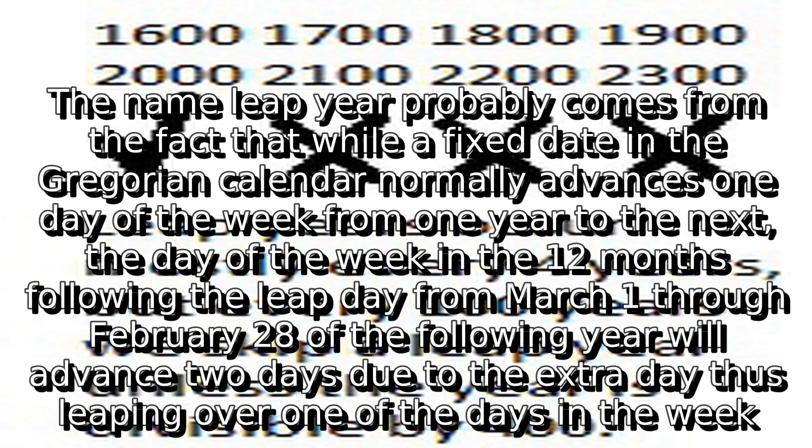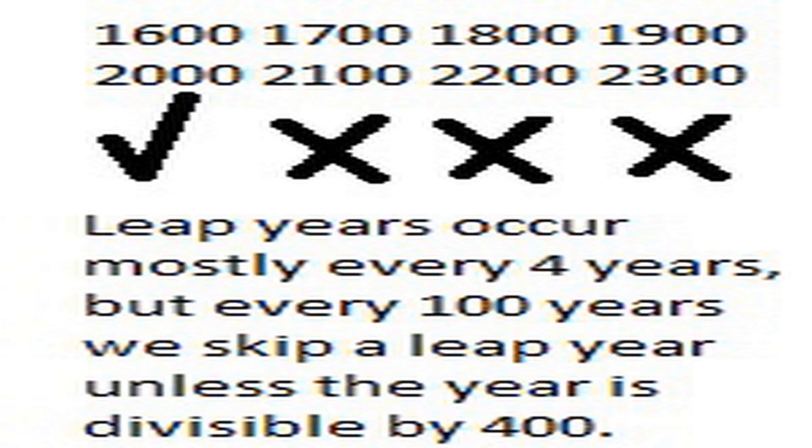The name leap year probably comes from the fact that while a fixed date in the Gregorian calendar normally advances one day of the week from one year to the next, the day of the week in the 12 months following the leap day — from March 1st through February 28th of the following year — will advance two days due to the extra day, thus leaping over one of the days in the week.